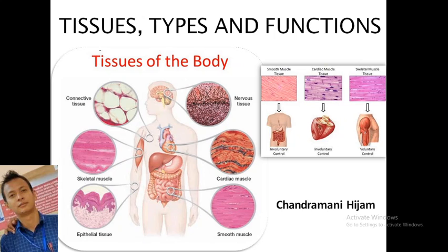Today we will study about tissues, the types of tissues and concerns of the tissue. Tissue is the most important subject in histopathology because without tissue we will not understand anything. Looking at pictures from the beginning, we can see connecting tissues, nervous system, cardiac, skeletal muscle, epithelium tissue, and smooth muscle — these are the types of tissues present in our bodies.